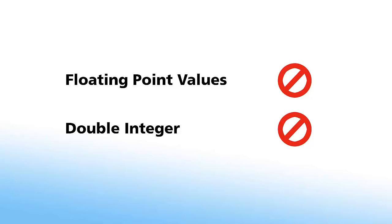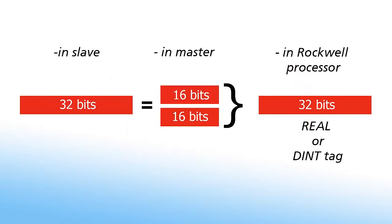This presents a small problem since Modbus does not have a float or dint data type. The solution, obviously enough, is that the 32-bit value is broken into two separate 16-bit registers, and then recombined into a 32-bit real value.